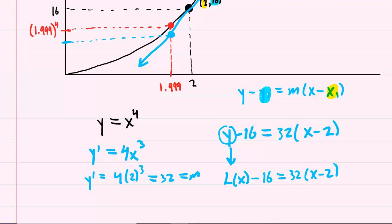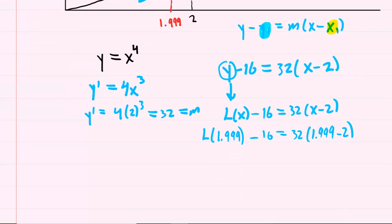So basically, you're computing L of 1.999 minus 16 equals 32 times 1.999 minus 2. Let's take out our calculators. Let's do 1.999 minus 2. We get negative 0.001. We've almost got it. We'll multiply the 32 by the negative 0.001, and we get negative 0.032.